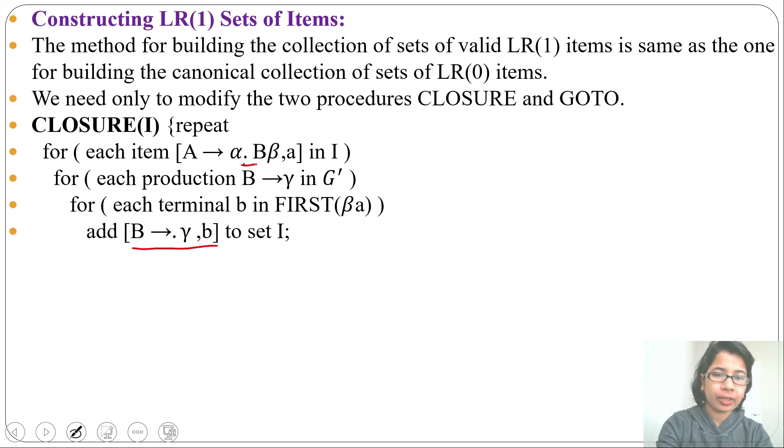Means this is closure of which production. Like here, dot is before B. So due to this production, you are writing this FIRST(β and a) will be lookahead here. I will explain through example. And you need to repeat this step until no more items are added to I. So this is all about CLOSURE.